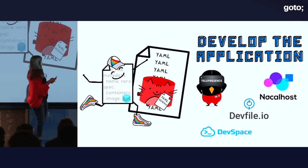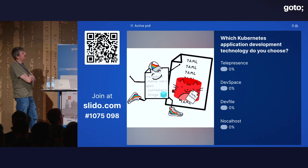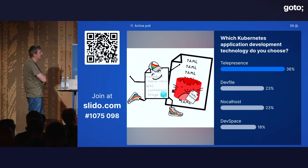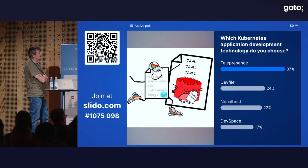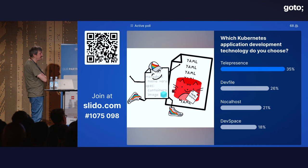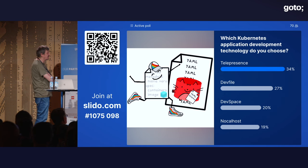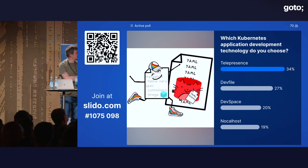Victor recaps: Telepresence primarily connects your local application with something remote, or redirects remote traffic to your laptop. DevFile is a specification for defining what an application looks like while developing it, with Odo as the implementation. Nocohost is click-click-click in a UI. DevSpace is similar to DevFile but made by Loft — it's an implementation directly with no common specification. Telepresence wins the vote.